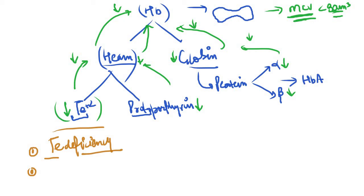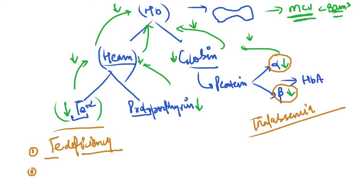Similarly, if there is a decrease in globin production — whether alpha globin or beta globin — it will also lead to decreased hemoglobin and microcytic anemia. The next condition causing microcytic anemia is the thalassemias — a group of disorders with decreased globin chain production. Depending on which globin is decreased, we have alpha thalassemia and beta thalassemia. Whatever the type, the MCV will be less than 80 micrometer cube and it will be microcytic hypochromic anemia.